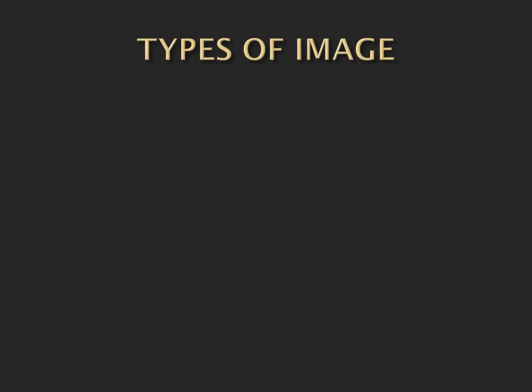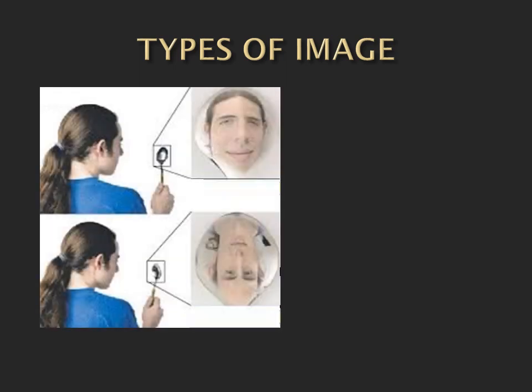We can distinguish the type of image based on the image projected by the mirror. If the orientation is upright, the image is virtual. But if the image projected by the mirror is inverted, then the type of image is real.